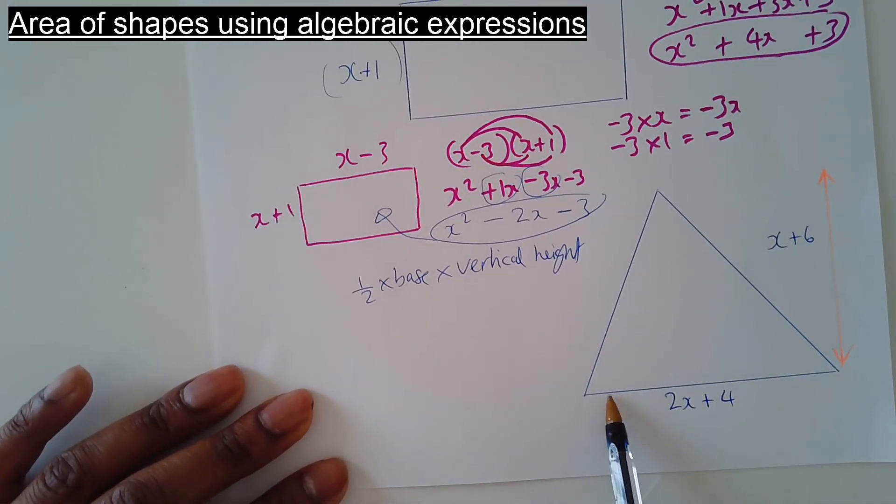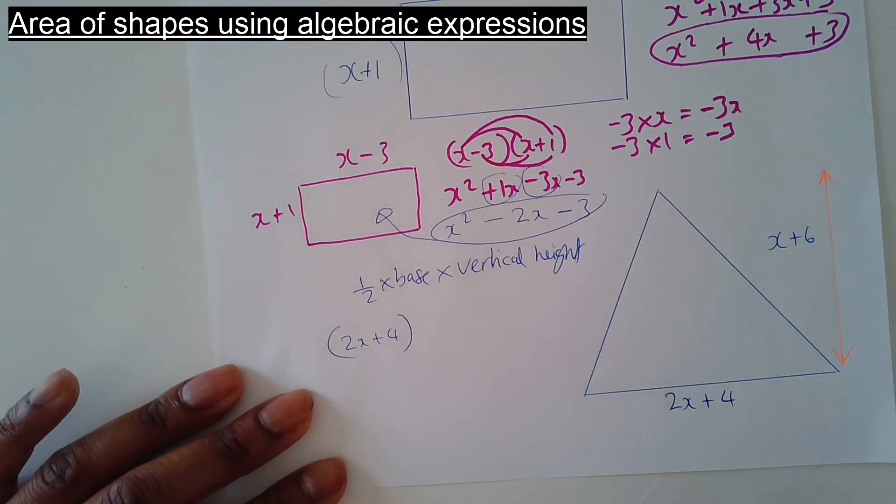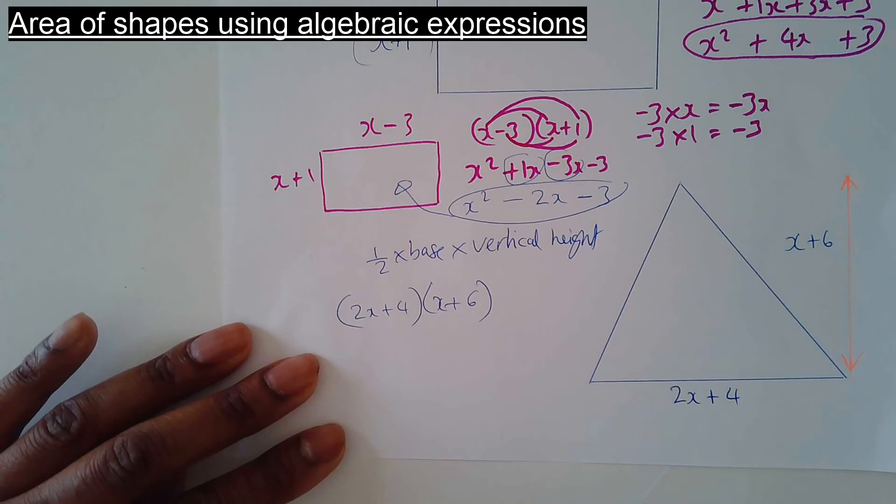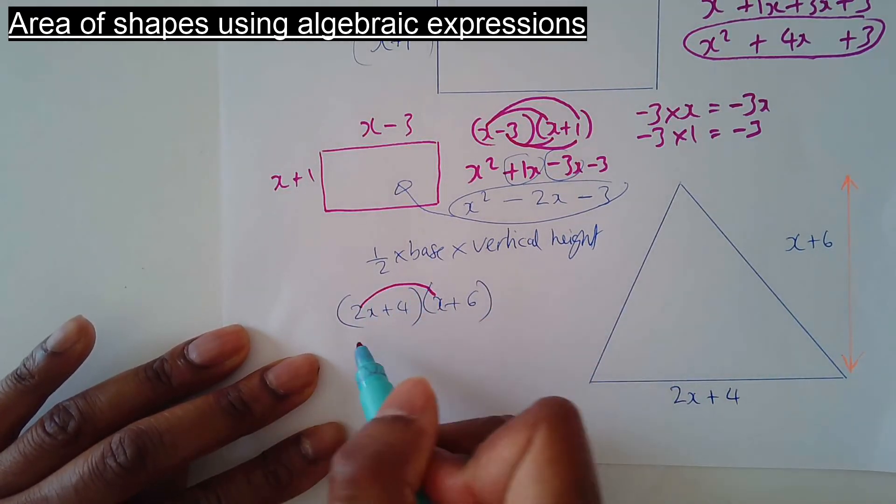So what I'll do, I'll just do base times height and then I'll halve it. Base times height. That's the base, that's the height. 2x times x is 2x squared.